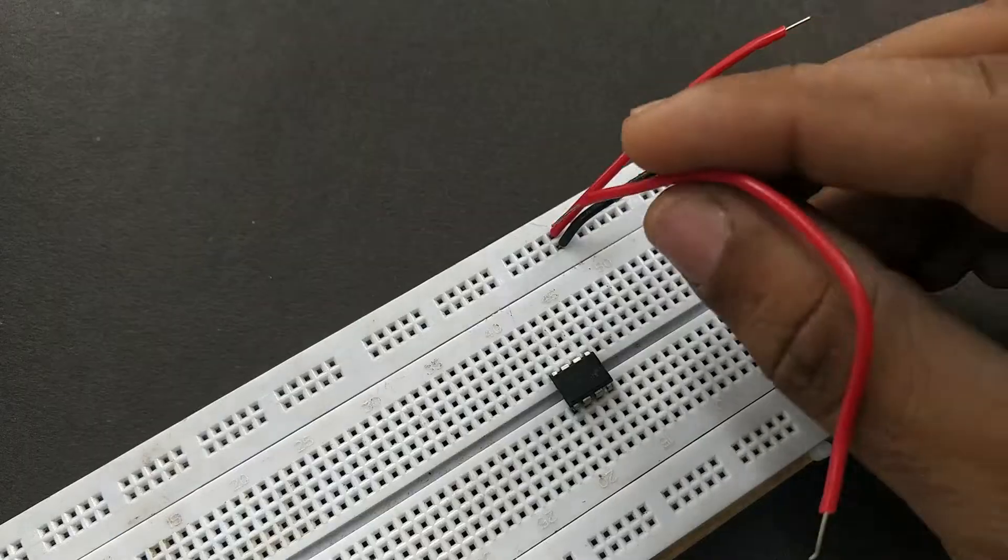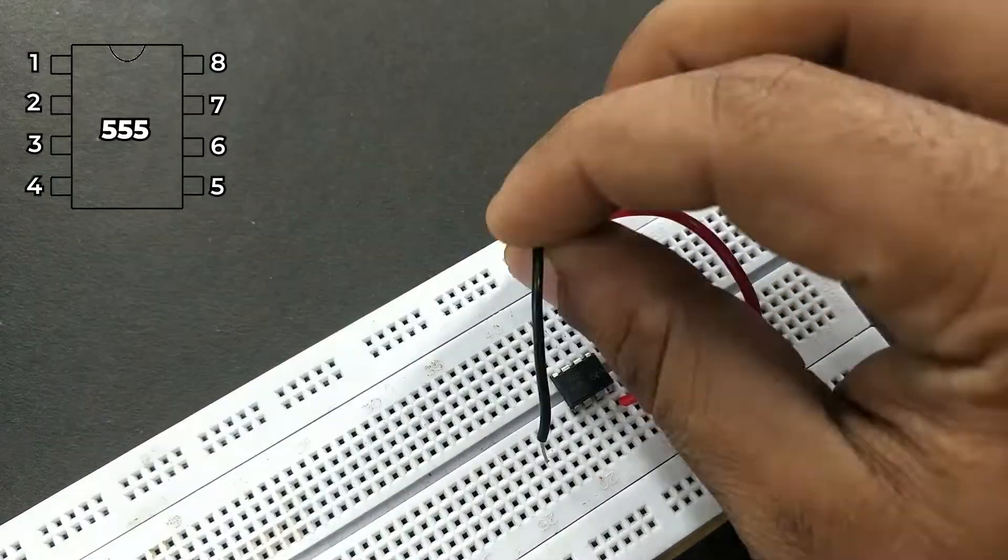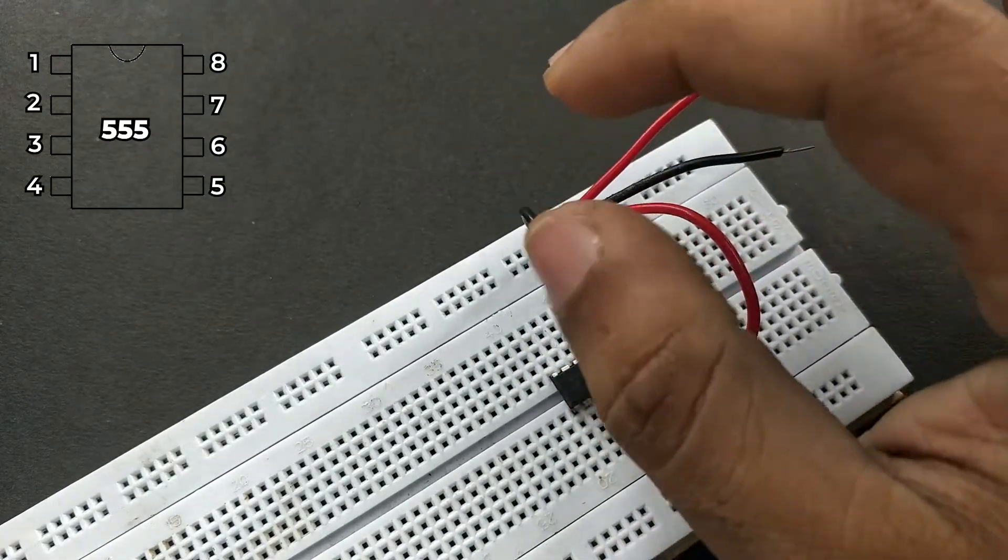Now let's start making the connections. First connect a positive line to pin number 8 of the timer IC. Then connect the negative line to pin number 1 of the timer IC.